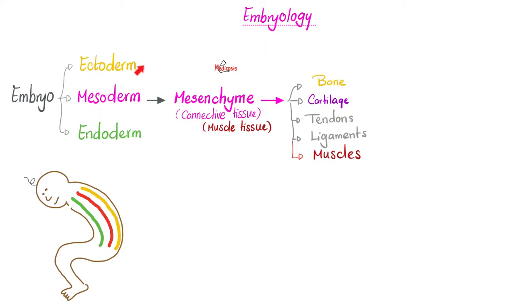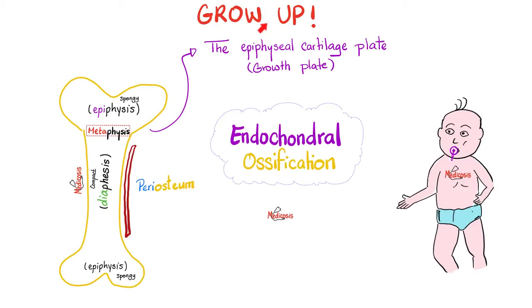Cartilages are mesodermal in origin and they are connective tissue. When you were an embryo growing, you needed endochondral ossification — the cartilage is dying and on top of that we are laying down new bone. This endochondral ossification happens thanks to the hyaline cartilages.